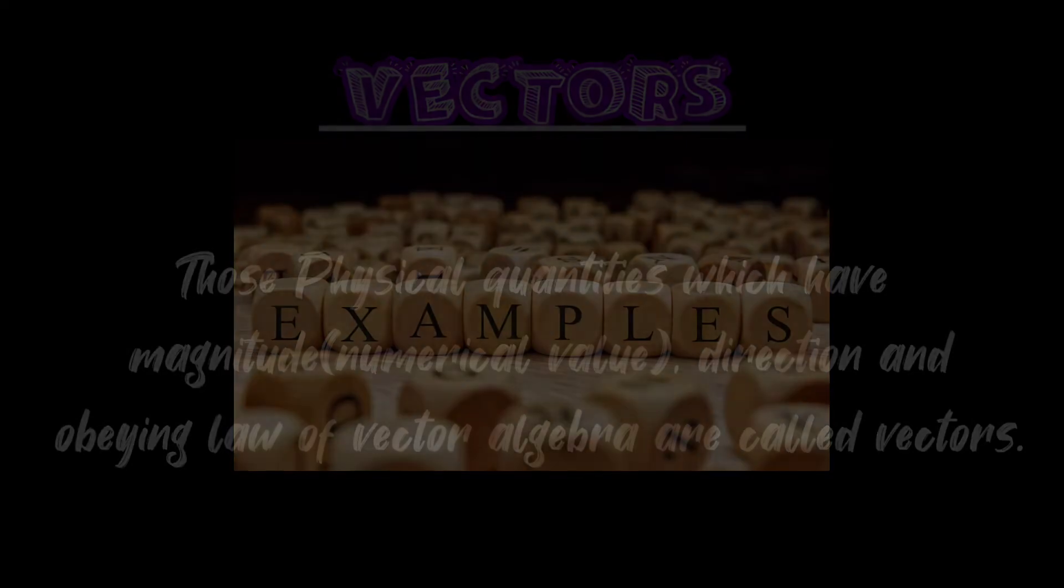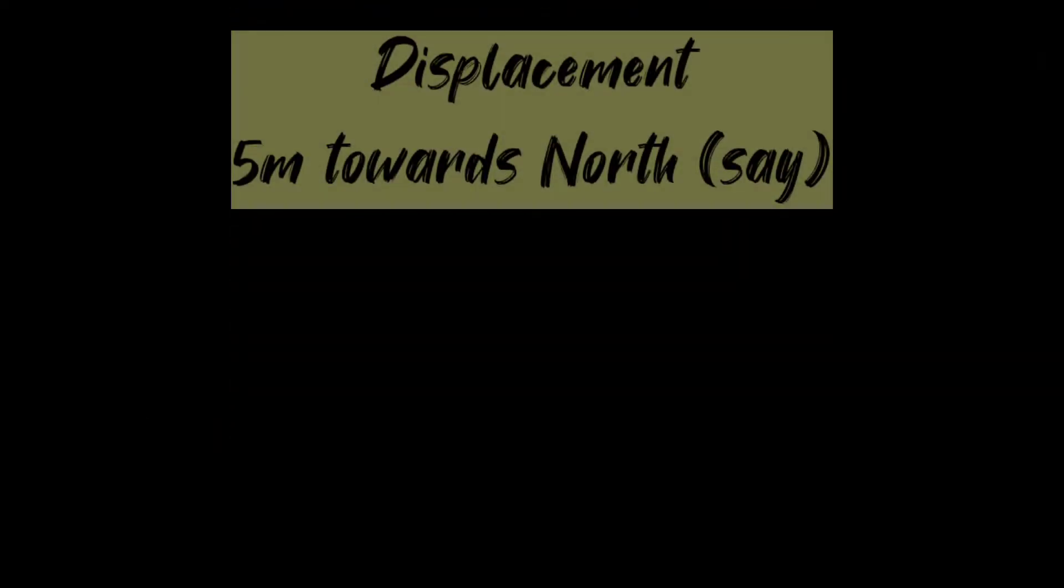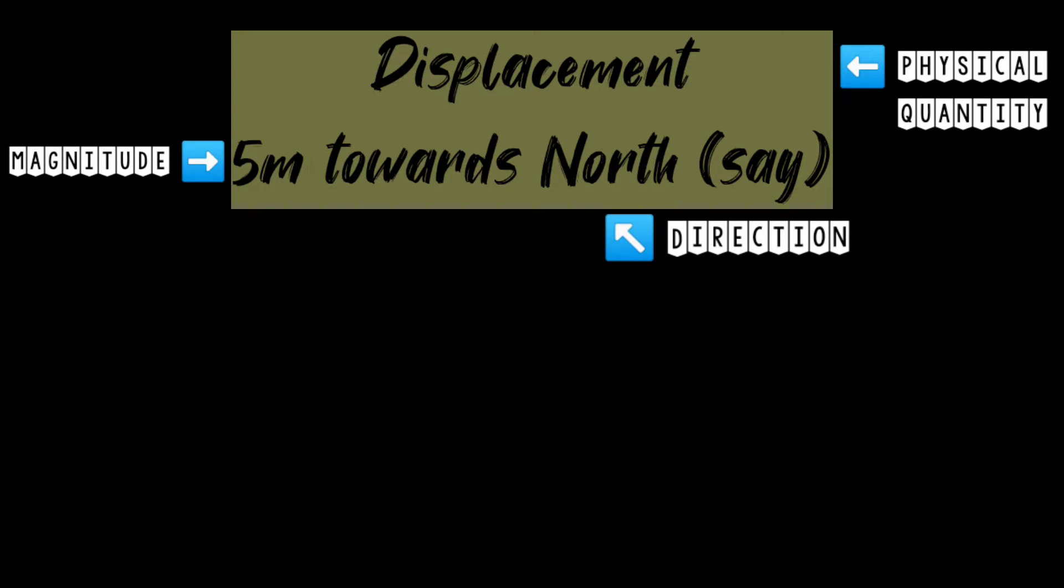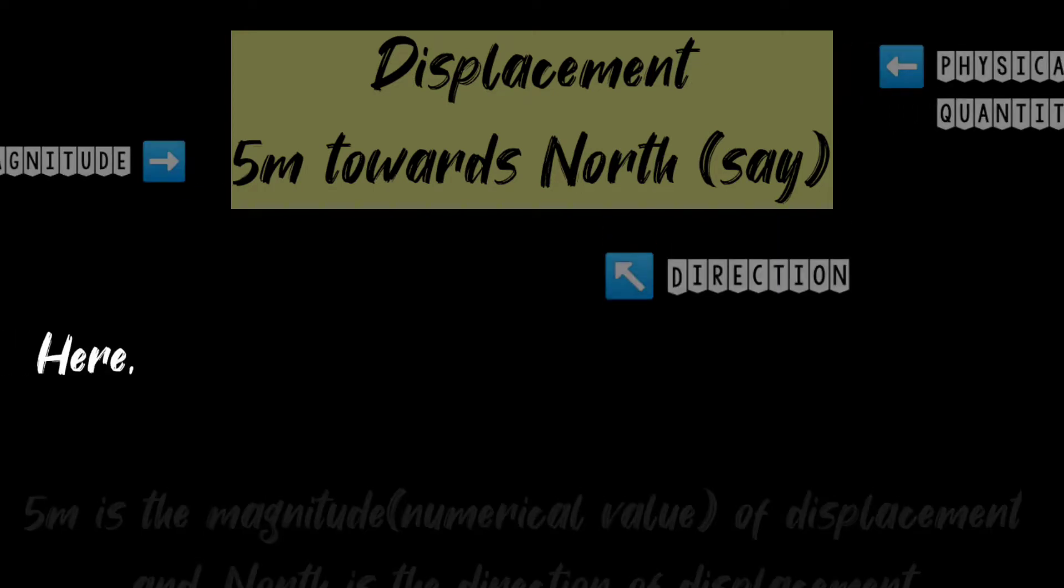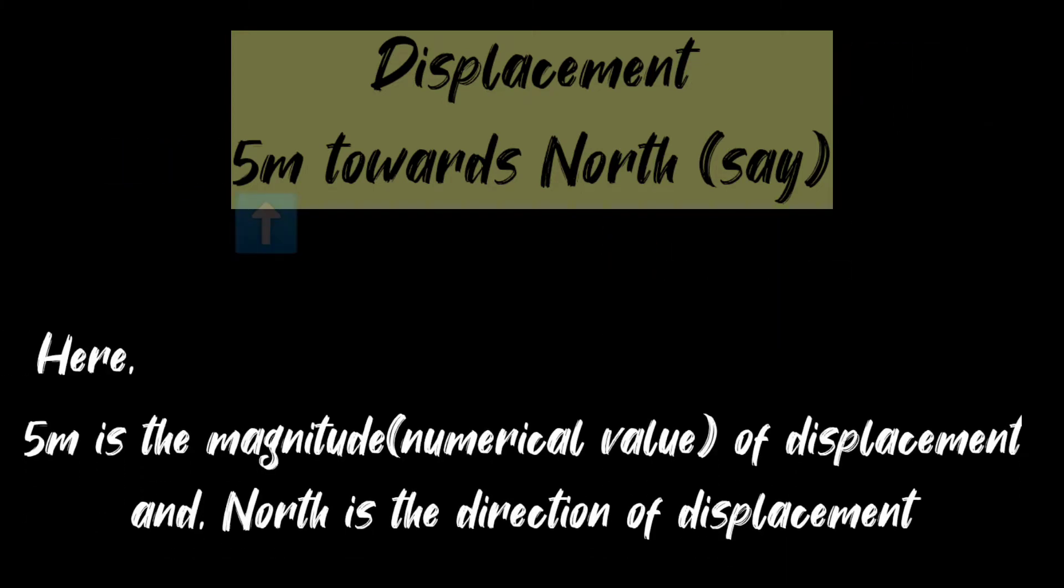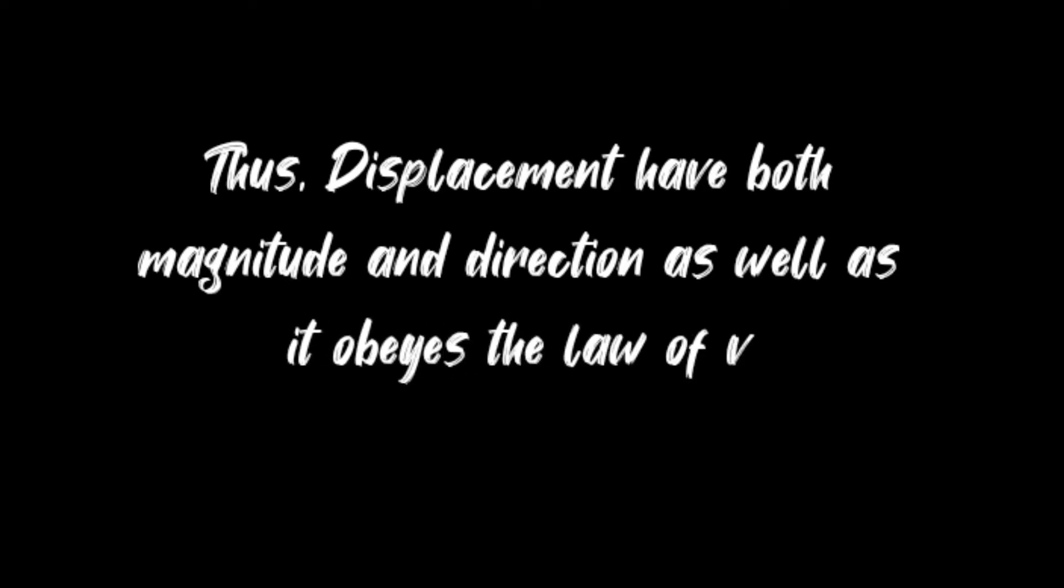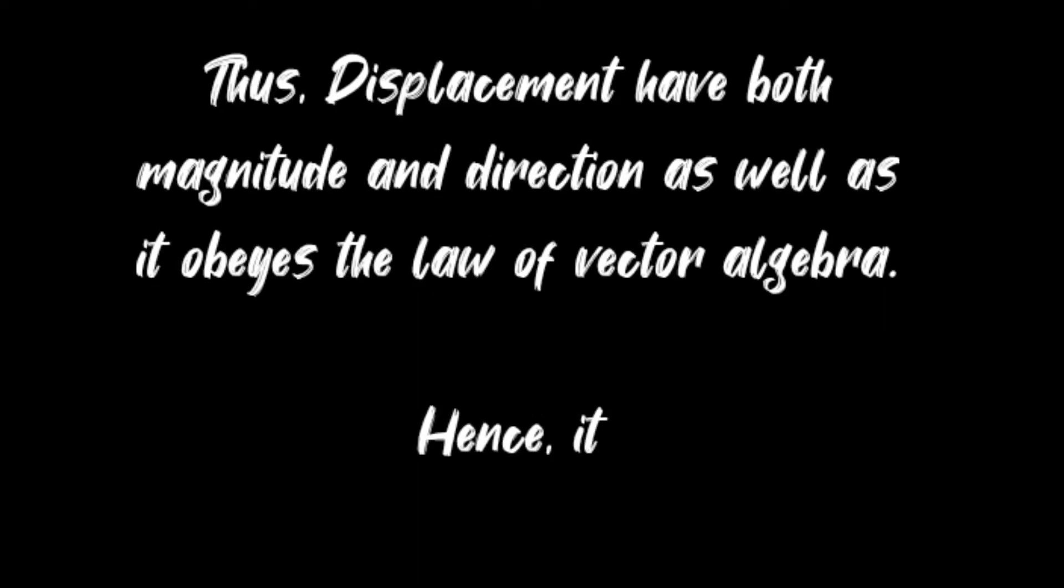Let us take an example: displacement, 5 meters towards north. Here, 5 meters is the magnitude of displacement, and north is the direction of displacement. Thus, displacement has both magnitude and direction, as well as it obeys the law of vector algebra. Hence, it is a vector.